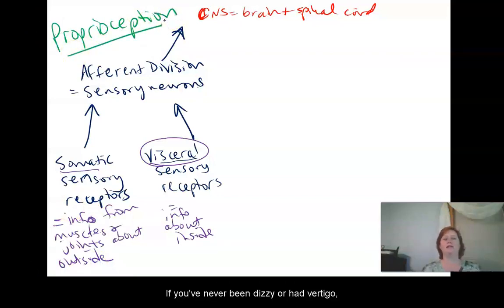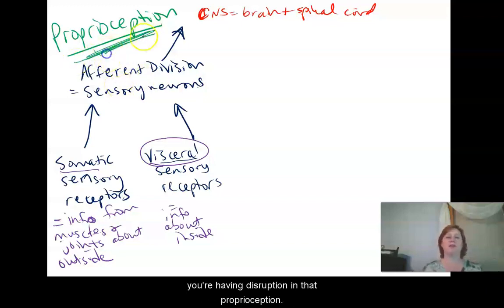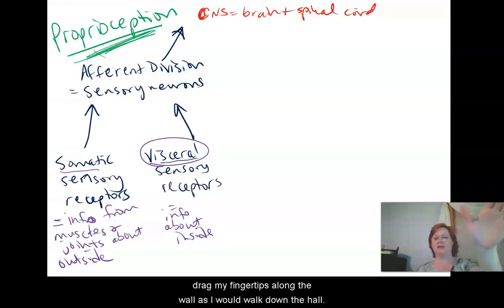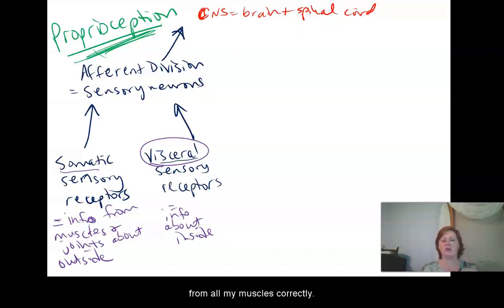If you've ever been dizzy or had vertigo, or the bed spins, or disoriented feeling when you're on a boat or right after you get off a boat, you're having disruption in that proprioception. So we really take that for granted. I remember one time I had kind of a middle ear infection and everything felt like I was just walking around on a boat. And what I had to do was walk down the hallways at Delta, and I would just kind of touch the wall and kind of drag my fingertips along the wall as I would walk down the hallway. And just that little bit of sensory information from touching the wall let my brain know where I was in space, because I wasn't getting that information from my ear or from all my muscles correctly.